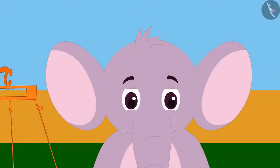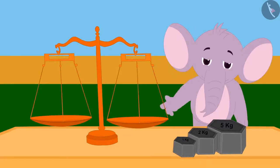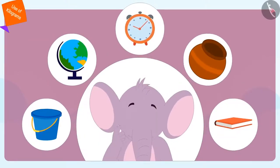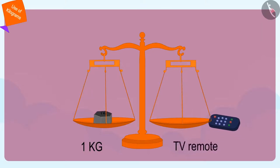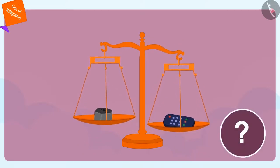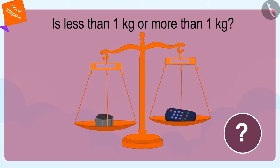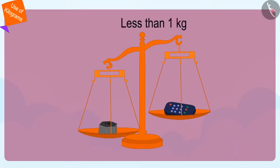Appu liked the idea of weights so much that he bought some weights and scales for his house too. Appu wants to determine the weight of some items in his house. He first put a 1 kg weight on one side of the scale and then placed the TV remote on the other side. Children, can you guess whether a TV remote weighs less than a kg or more than a kg? The remote weighs less than 1 kg.